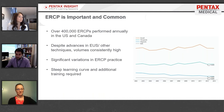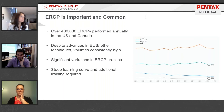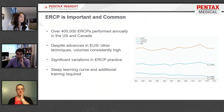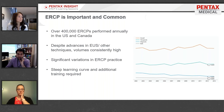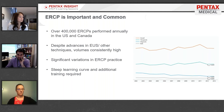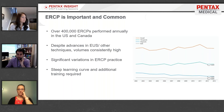ERCP is a very commonly performed procedure — about 400,000 are done per year in the US and Canada, roughly equivalent to inpatient hip surgeries or appendectomies. Despite advances in ultrasound, radiographic, surgical, and endoscopic techniques, ERCP volumes have stayed consistently high and actually rose toward the tail end of the past decade. Diagnostic ERCP, shown by the blue curve, has essentially disappeared from nationwide data, while therapeutic volumes remain high. There is significant variation in practice and a steep learning curve for both nursing and physician providers.